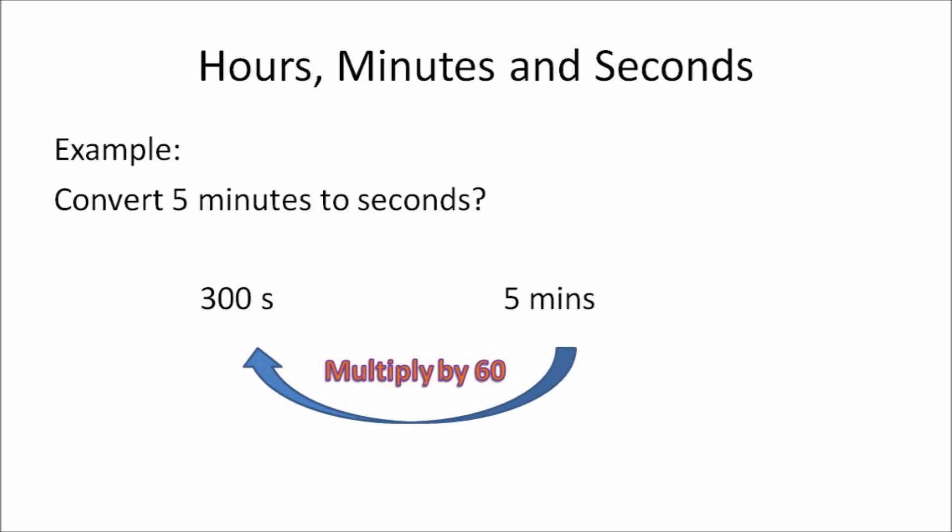In this example: convert five minutes to seconds. That means you need to convert minutes to seconds. In order to do that, you need to multiply the amount you have in minutes by 60. So five minutes multiplied by 60 gives you 300 seconds.